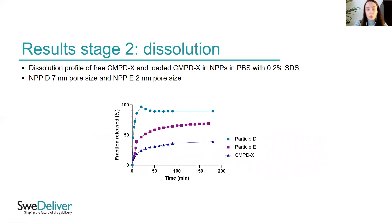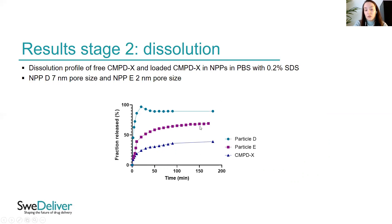For the second stage — the same particle size with different pore sizes loaded with CMPD-X, a highly insoluble compound — CMPD-X alone dissolves with a very low total fraction in the medium. When encapsulated into nanoporous particles, the total amount that can be dissolved increases significantly compared to the free drug. Furthermore, a difference is seen between the two pore sizes: particle D, with the larger pore size of 7 nm, and particle E, with the smaller pore size of 2 nm. By changing the pore size, the dissolution profile can be slowed down or sped up accordingly.